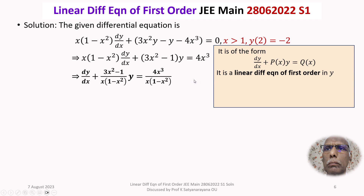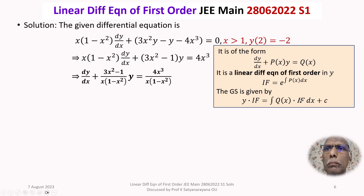To solve such a differential equation we first find an integrating factor. The integrating factor (IF) is given by e^[∫P(x)dx]. Then the general solution is y·(IF) = ∫Q(x)·(IF)dx + C, where C is an arbitrary constant of integration. We write down the integrating factor: e^[∫(3x² - 1) / (x(1 - x²)) dx].